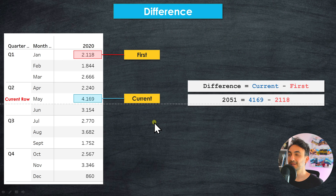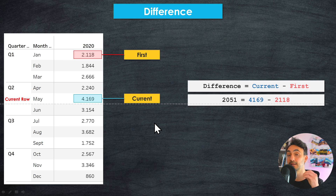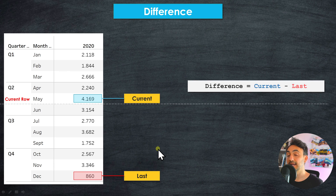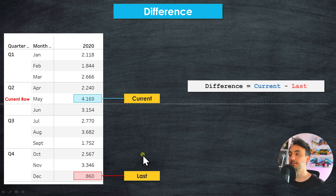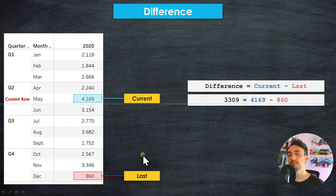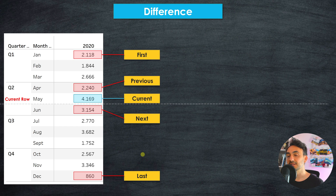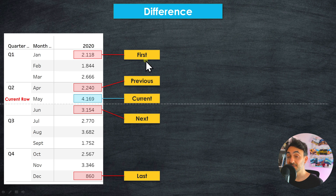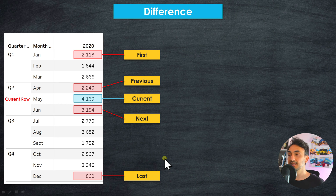The last option is to compare the current month, May, with the last month, December. Tableau finds the difference between the current value and the last value in the visualization and subtracts them. So we have four options for which value to compare with the current: previous, next, first, or last.